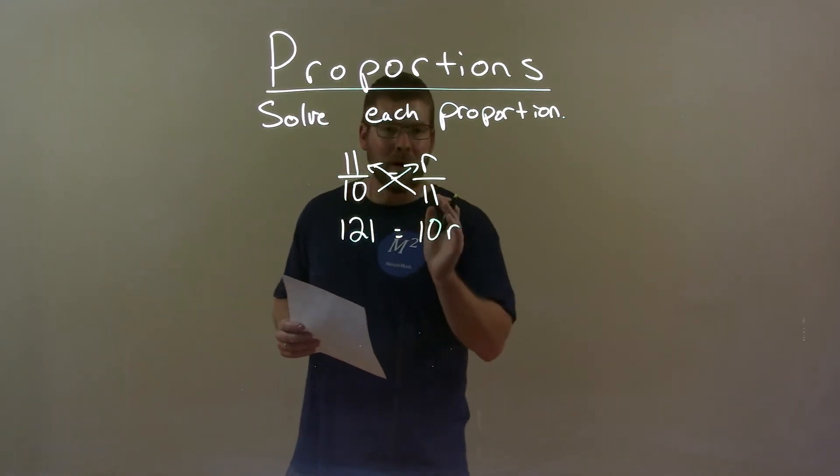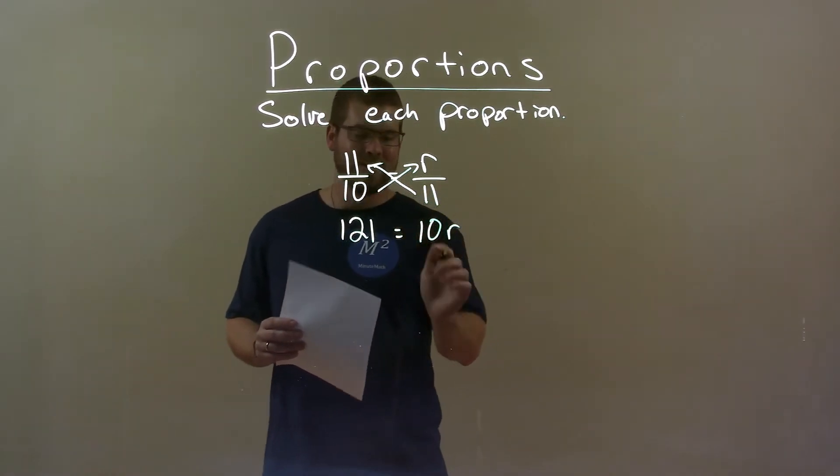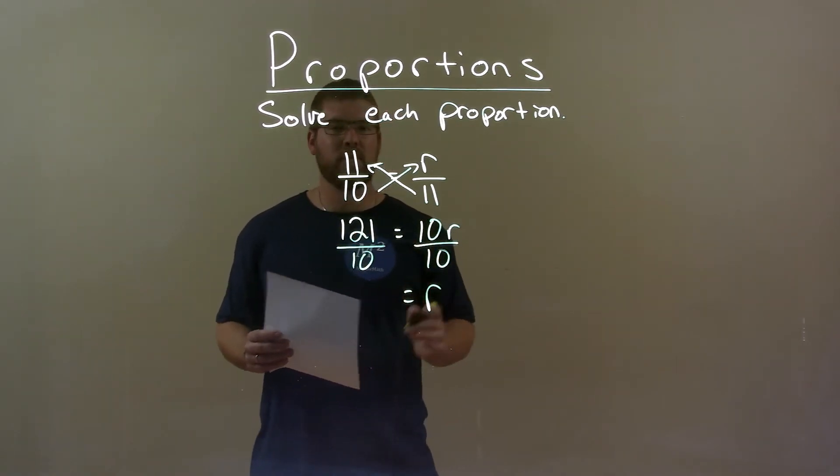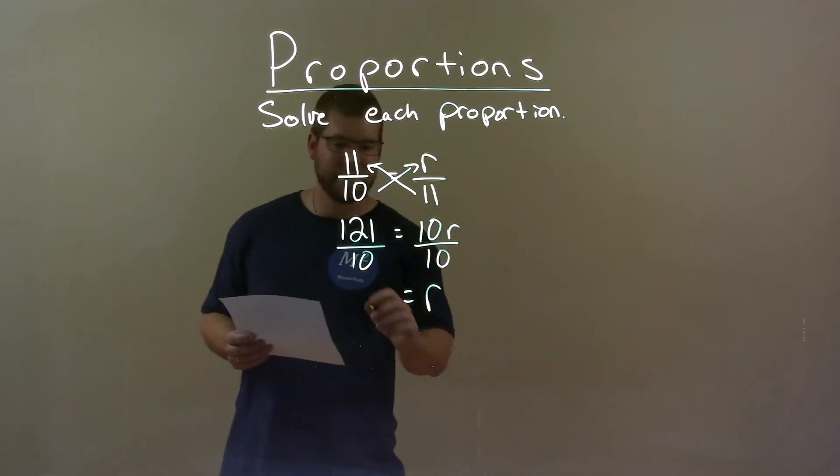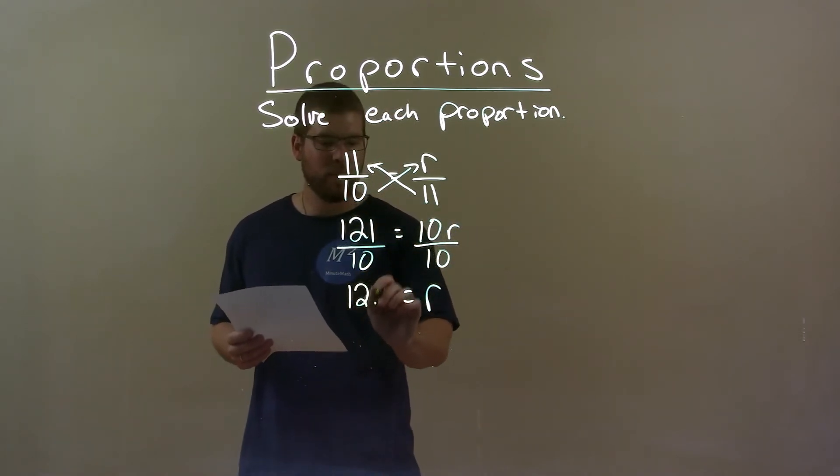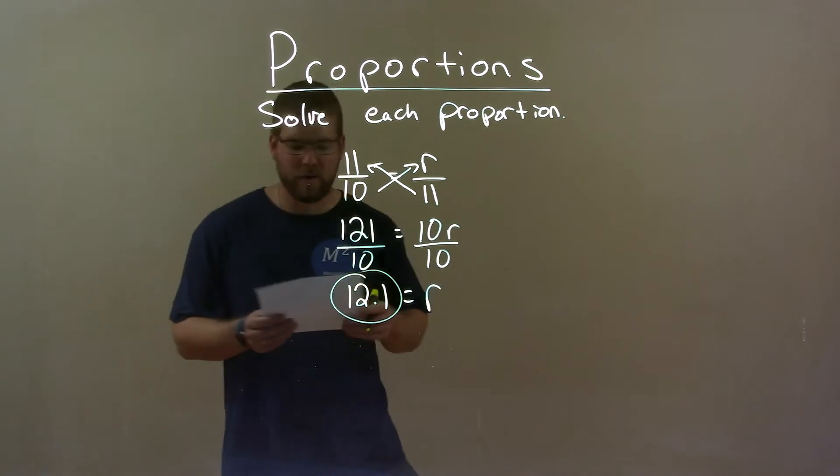Then from there we want to get r by itself. Divide both sides by 10. That gives me r by itself to the right. 121 divided by 10 is 12.1, and so that is our final answer.